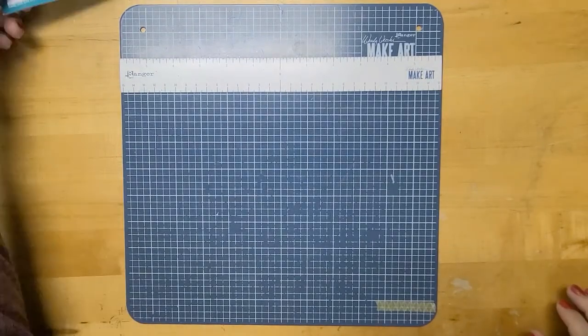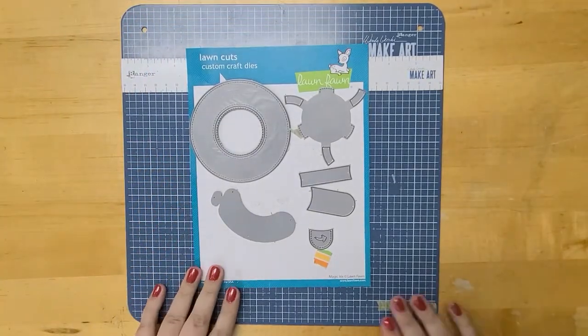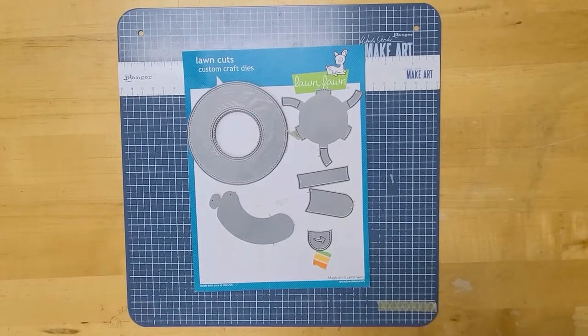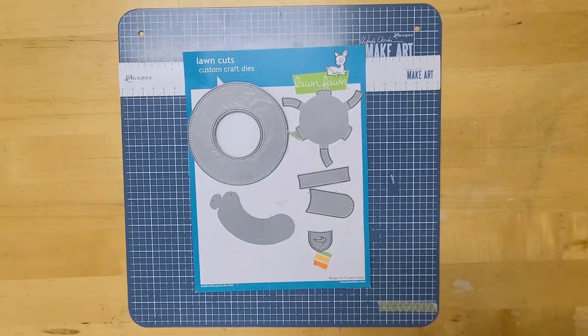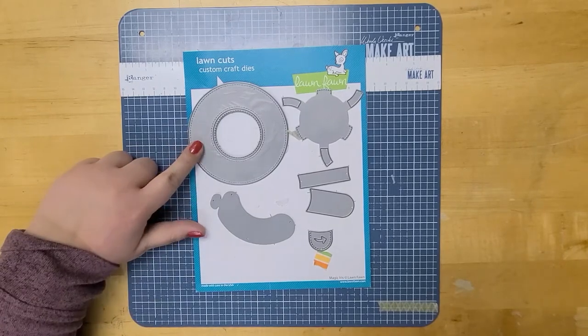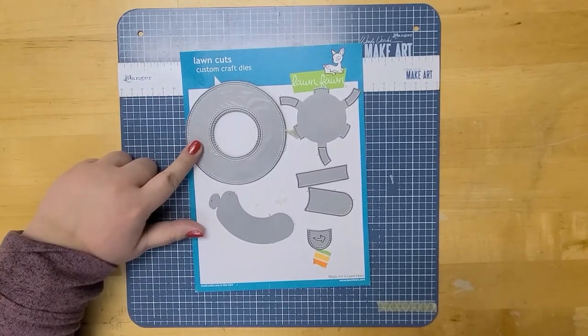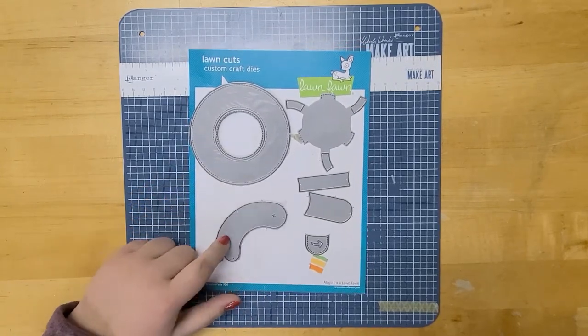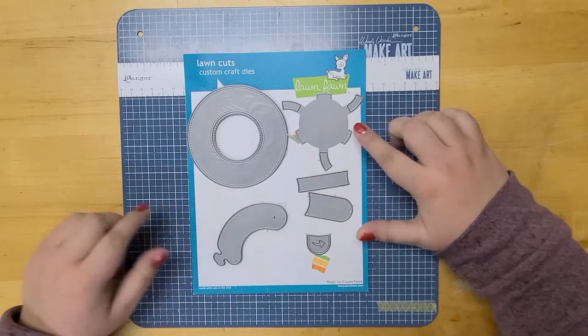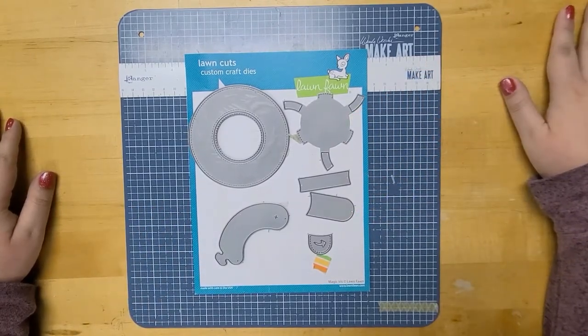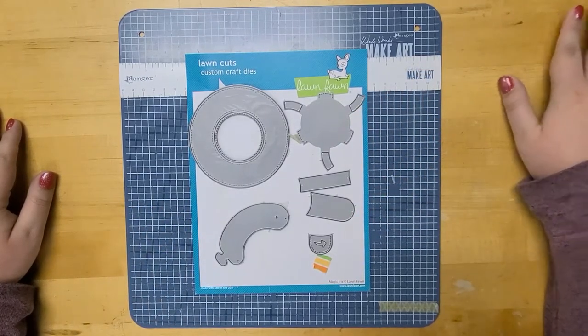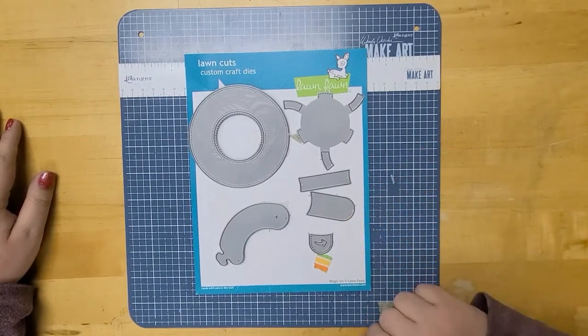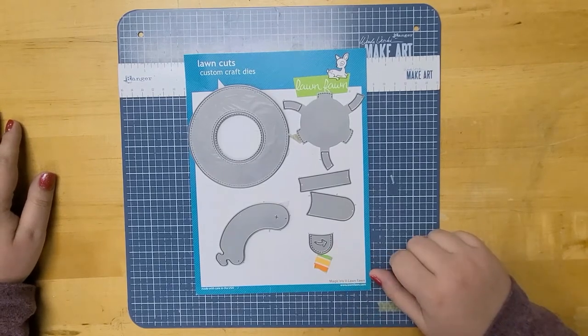So here I have our Magic Iris set. As you can see ours is well loved, we use it all the time at the store. It has a few different pieces here. This piece here is the ring. This one here Lawn Fawn calls the sausage piece. This piece here they also call the flux capacitor piece. We have the stabilizer, the pull tab, and then the decorative arrow that goes on top of the pull tab.